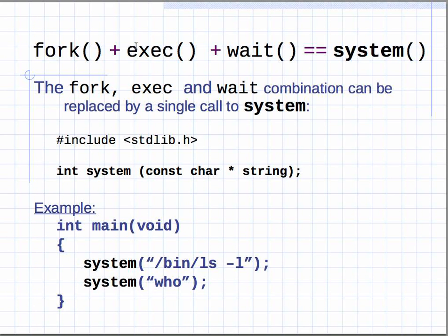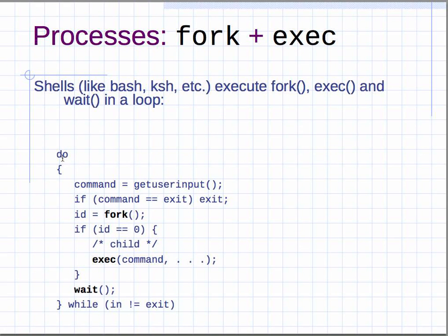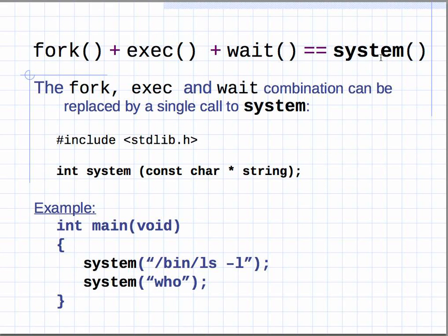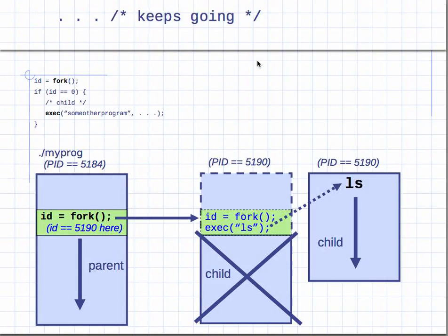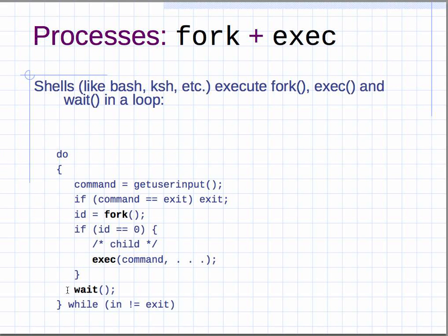You can combine fork, exec, and wait into one function call: system(). For example, system() executes a command as if it were typed on the command line, and once it's done you can execute the next. Instead of writing the if/fork, exec inside the child, and wait — you can use this one function call to do all that work. The main takeaway: fork starts a new process, exec reuses an existing process, and a shell is just fork, exec, and wait in a loop.